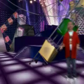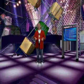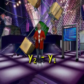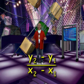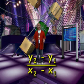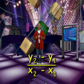So if you know the coordinates of two points on a line, you can use this formula — y₂ minus y₁ over x₂ minus x₁ — to find the slope. By the way, it doesn't matter which point you call x₁, y₁ and which point you call x₂, y₂. This formula is an algebraic method for finding the slope.